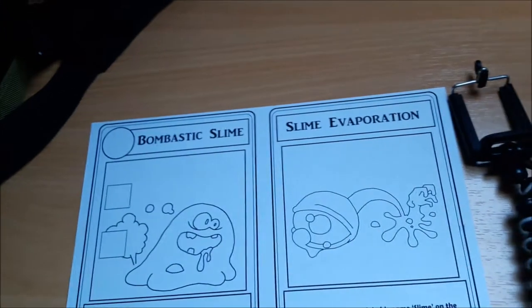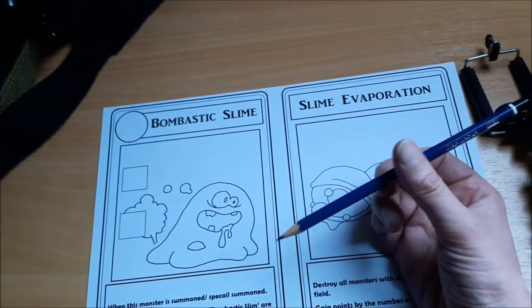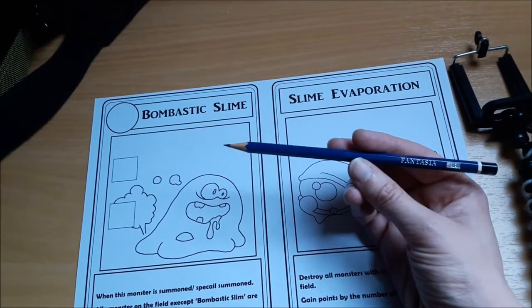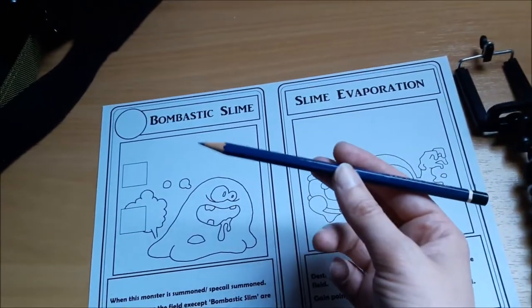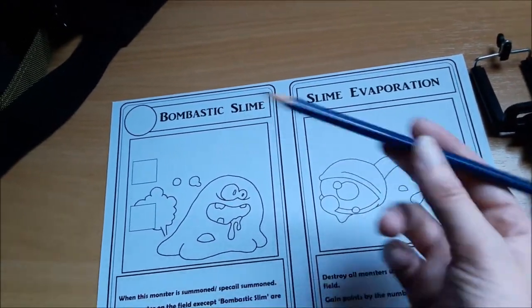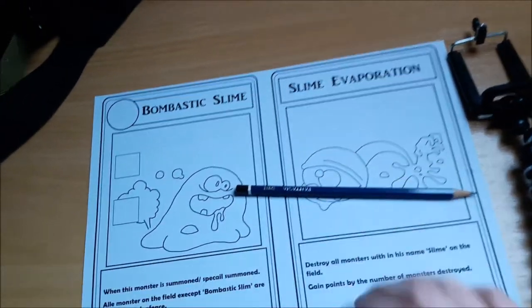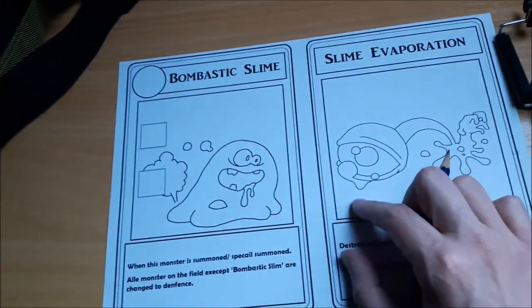Here I use a 2B pencil for my drawings. The B stands for black, so the higher the number, like two, three, four, the darker it gets. You also have H, that's hard, but I don't recommend H pencils because they leave markings on your paper that are not easy to erase.